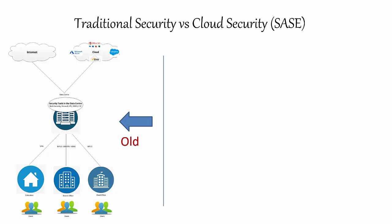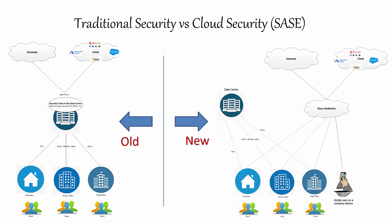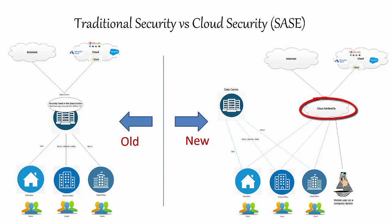There needs to be a better way of bringing users closer to cloud applications without traversing the data center for everything, and this is where cloud security services like Cisco Umbrella were introduced. With the new architecture, users traverse to the data center only if they need to access data center-specific applications; otherwise, they reach out directly to the internet and cloud services. User traffic passes through Cisco Umbrella for security enforcement and monitoring before getting to internet or cloud services, bringing users closer to the applications.